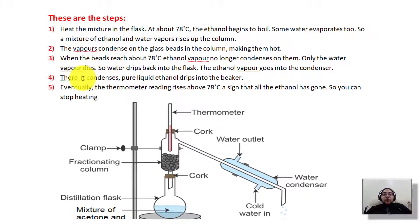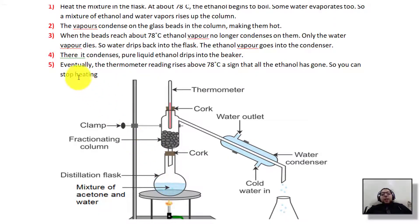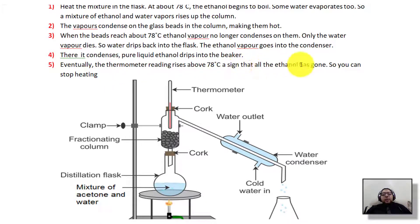The water drips back into the flask while the ethanol vapor goes into the condenser, where it condenses into pure liquid ethanol, which is collected. The water remains in the flask. Eventually the thermometer reading rises above 78°C — a sign that all the ethanol has been collected — so you can stop heating.